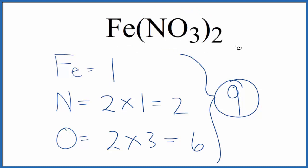So that's how you find the number of atoms in iron 2 nitrate. We have 1 iron, 2 nitrogens, 6 oxygens, and overall, we have 9 atoms.